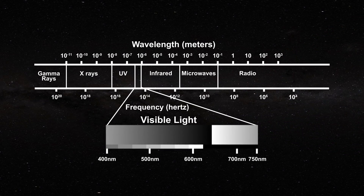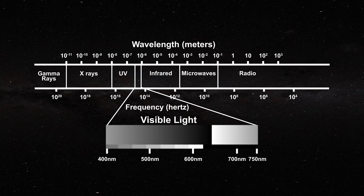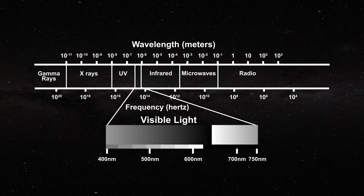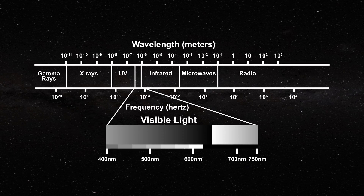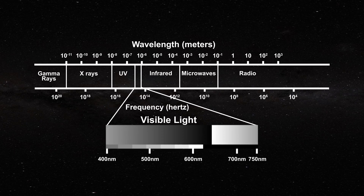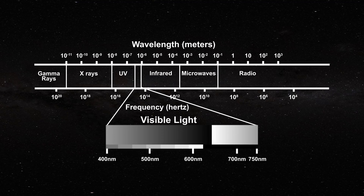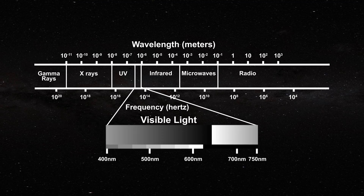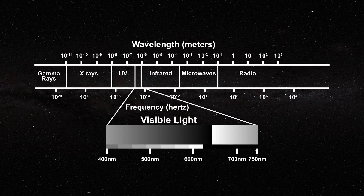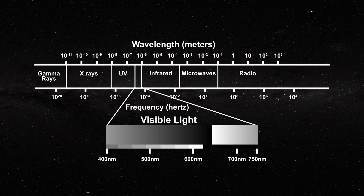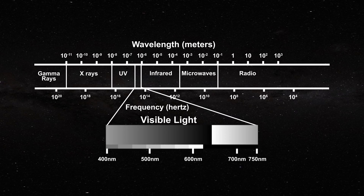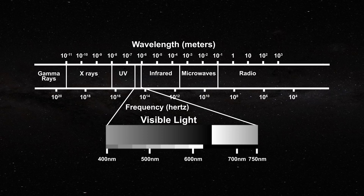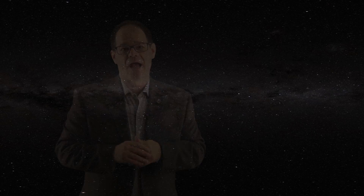To the left of the optical region, we have the shorter wavelengths: first the ultraviolet, x-ray, and gamma ray regions. These last two are not part of the thermal spectrum of the sun. To the right of the optical region comes the infrared, microwave, and radio wave regions. Once again, the last two are not really considered part of the solar spectrum.